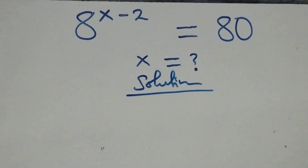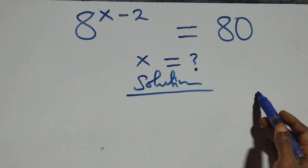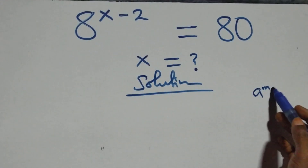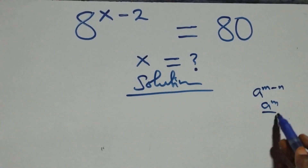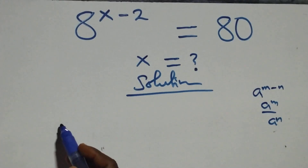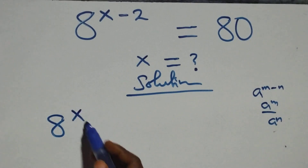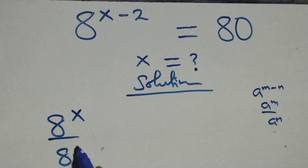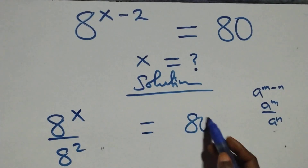Now what we have here: we can write a raised to power n minus n as a raised to power n over a raised to power n. At this here, we have a raised to power x over 8 squared equals 80.